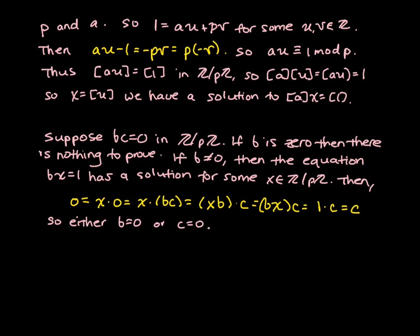So the final part of this proof involves saying that if we suppose that b times c equals 0 implies b equals 0 or c equals 0, then we want to show that implies that p is prime.